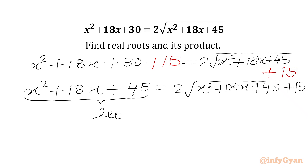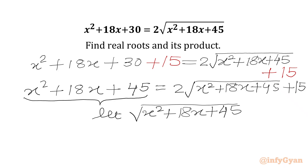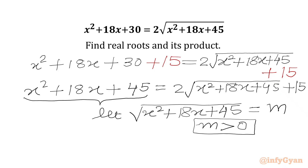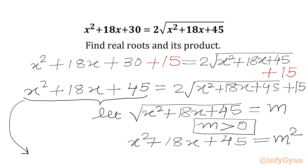Now both sides involve x squared plus 18x plus 45. Let us substitute: let M equal the square root of x squared plus 18x plus 45. For real x, M must be greater than 0. Squaring both sides gives x squared plus 18x plus 45 equal to M squared. So we can now write our equation as M squared equals 2M plus 15.